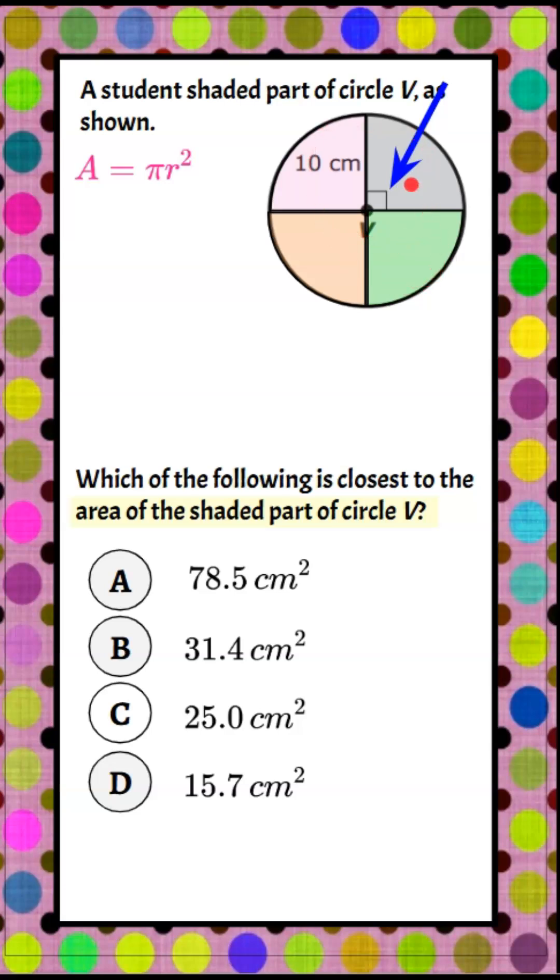I know that this section is one-fourth of the circle. One-fourth times pi r squared will give me the area of just this gray section right here. We're going to put in what we know in our formula.